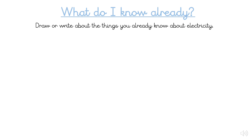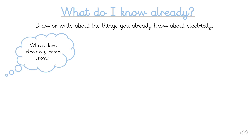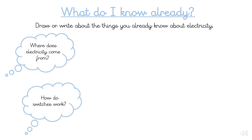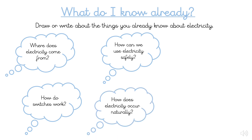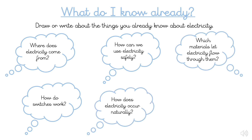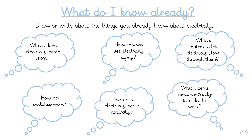You're going to start by thinking about what you know already about electricity. Ask yourself: where does electricity come from? How do switches work? How can we use electricity safely? How does electricity occur naturally? Which materials let electricity flow through them? And finally, which items need electricity in order to work?